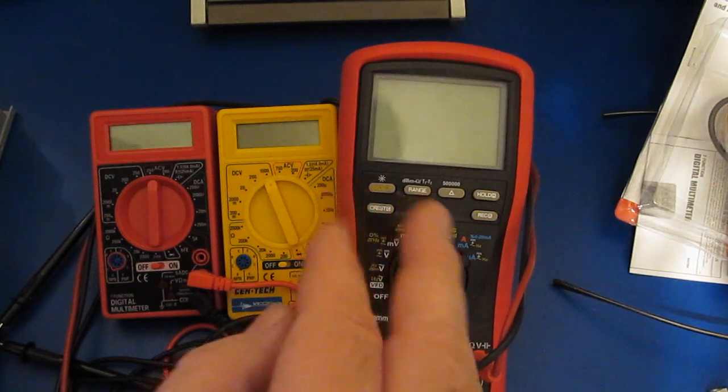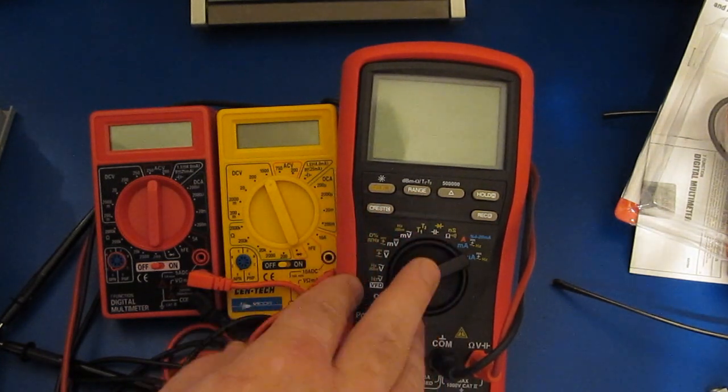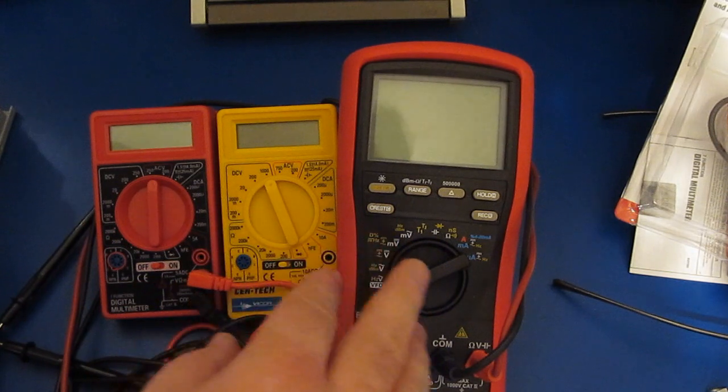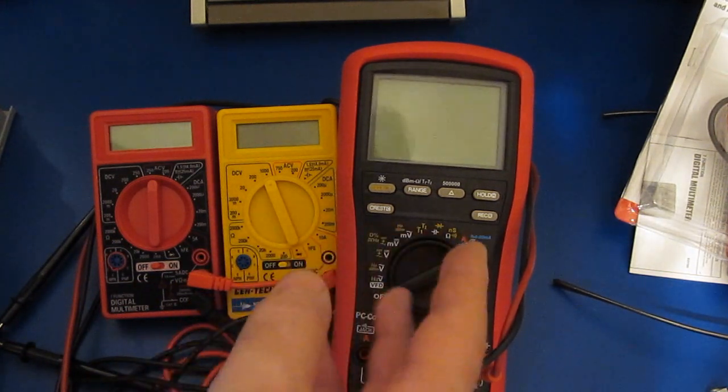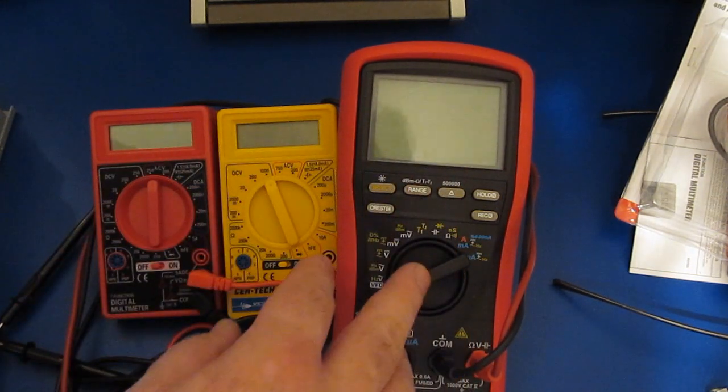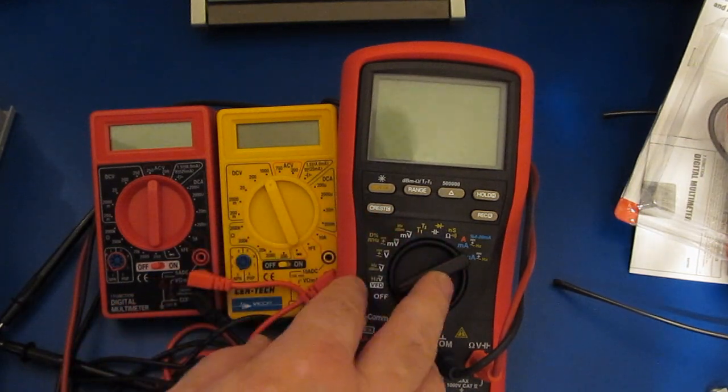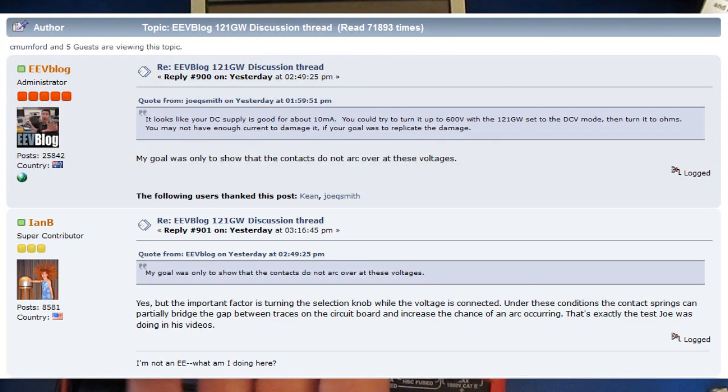So David made a couple of videos following that up where he was basically showing that the 121 GW was rated for 600 volts and he went ahead and he applied 1100 volts to that meter. He's basically saying, look, this meter is only rated for 600. It's obviously capable of handling almost two times that amount. I think that was the limit of his power supply.